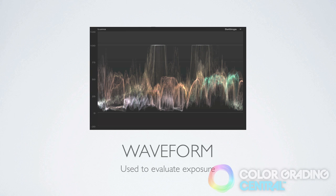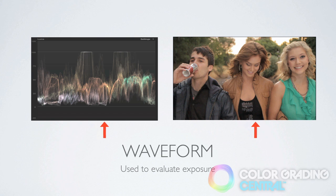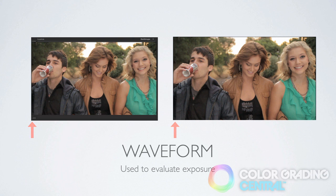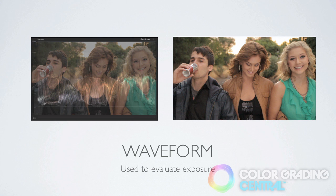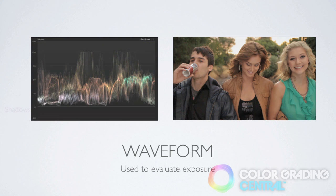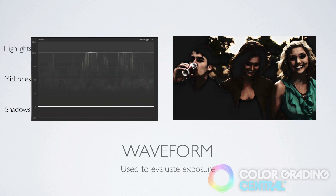The first scope I'll be talking about is the Waveform Monitor, which is used to evaluate the brightness or exposure of an image. You'll notice on the waveform, as well as on other scopes, that there is this trace — it's a representation of the measurement of the pixels in the image. The waveform monitor is read from left to right corresponding to the actual image, and exposure is read from top to bottom with the shadows at the bottom, the midtones in the middle and the highlights at the top.